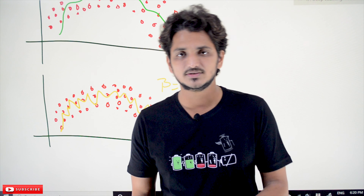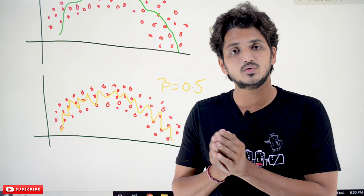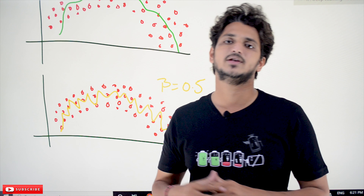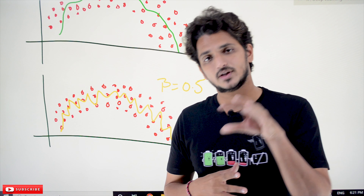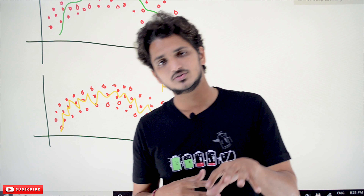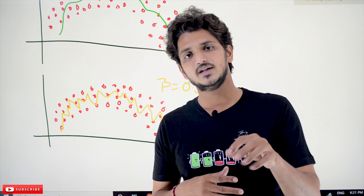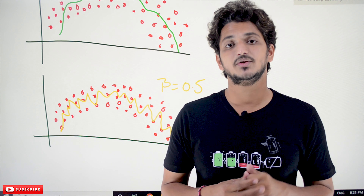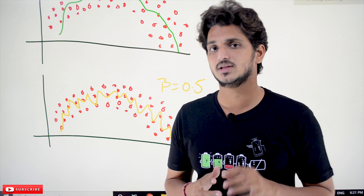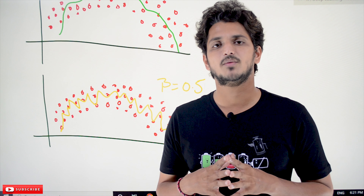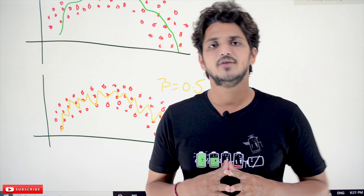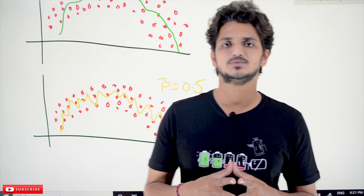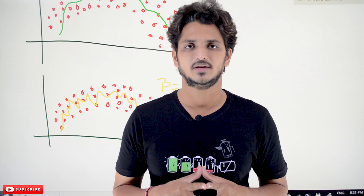This is what we are calculating in exponential weighted average, and it is very important to understand. In our next class, we use this concept when we discuss the solution for stochastic gradient descent. Hope you understand the concept. If you have any questions, please post them in the comment section below. Thanks for watching — if you haven't subscribed to our channel, please subscribe and press the bell icon for the latest updates. Thank you.